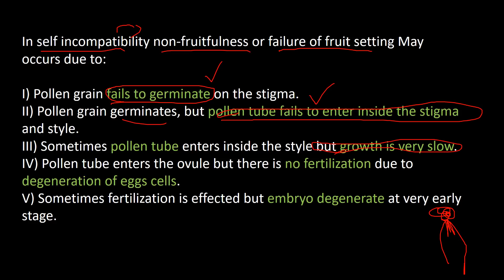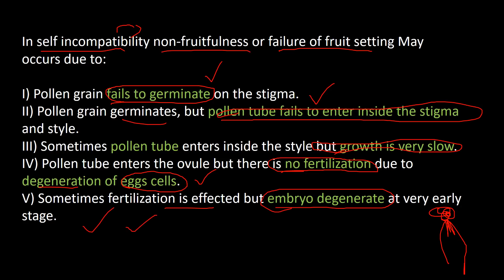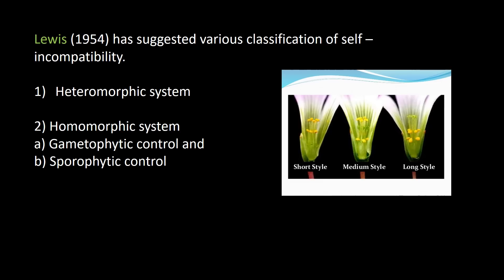Third, even though the pollen tube enters the stigma, the growth is very slow — at that rate the egg cells would have already undergone degeneration, so fertilization does not occur. Fourth, even if fertilization is affected, the embryo degenerates at a very early stage. These are the ways incompatibility takes place.